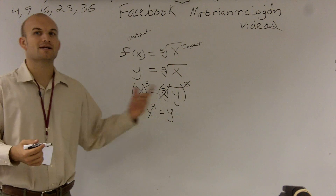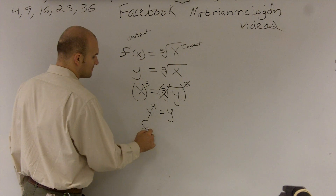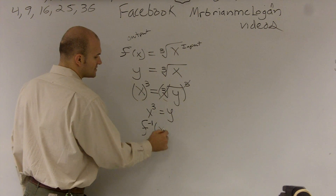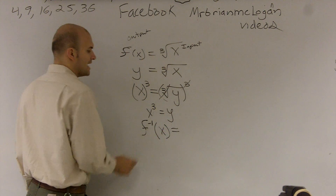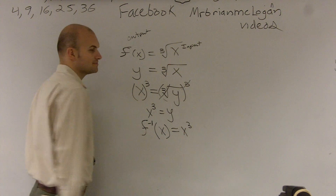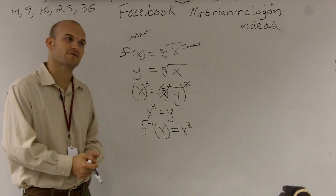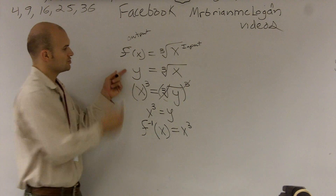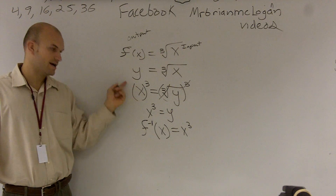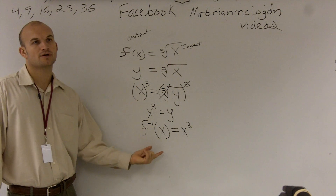Then let's go back to our notation. How do we write inverse? We write f with a negative one up there — f inverse of x — now equals x cubed. So all you really need to do when you're trying to find the inverse of a function: write it as y, switch your x and y, solve for y, and then put it back into inverse notation.